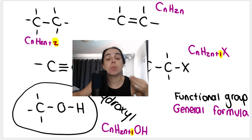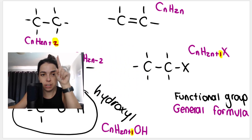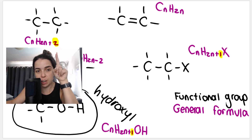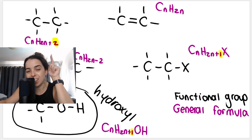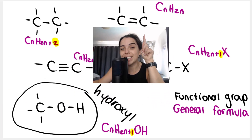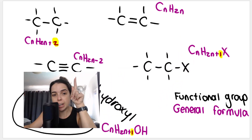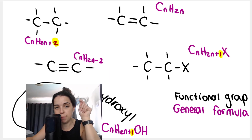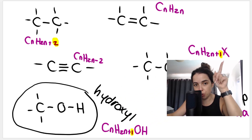To quickly recap what we should have covered already: the functional group structural formula and general formula for alkanes — saturated hydrocarbons with single bonds between carbon atoms. For alkenes, a double bond and the general formula. Alkynes, triple bond and the general formula. Haloalkanes, same thing — functional group and general formula.